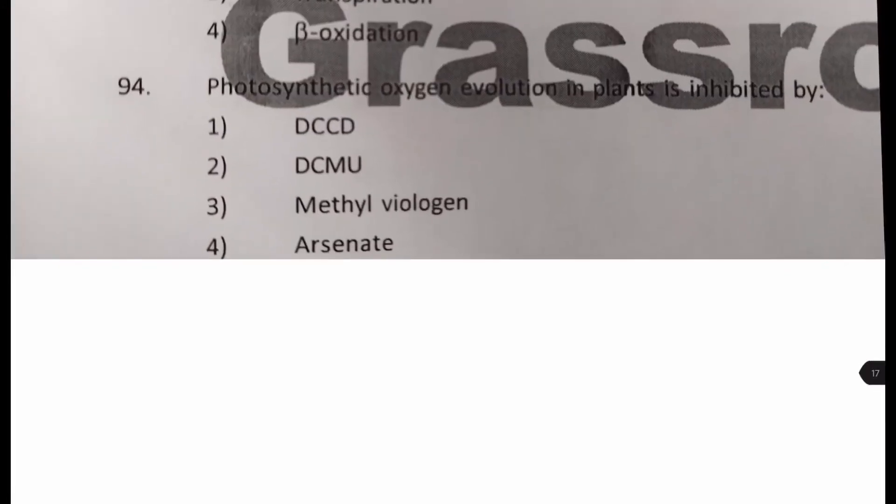Photosynthetic oxygen evolution in plants is inhibited by, and in the options, they have given us few inhibitors with short names. This is again a difficulty level question, and so we have to be careful, and options are DCCD, which is actually an ATP synthase inhibitor. It inhibits the F0, F1 ATP synthase complex, right? So, it is not affecting photosynthesis. So, this won't be our answer.